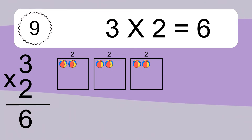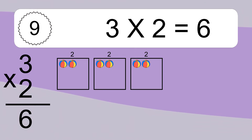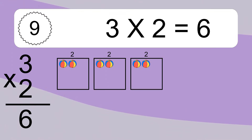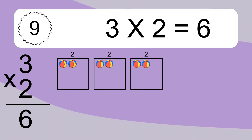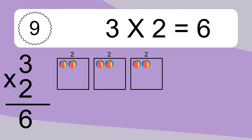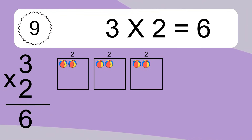We have 3 boxes, and each box has 2 colorful balls inside. If you count all the balls in all the boxes together, you will have 3 times 2 balls. This equals 6 balls.